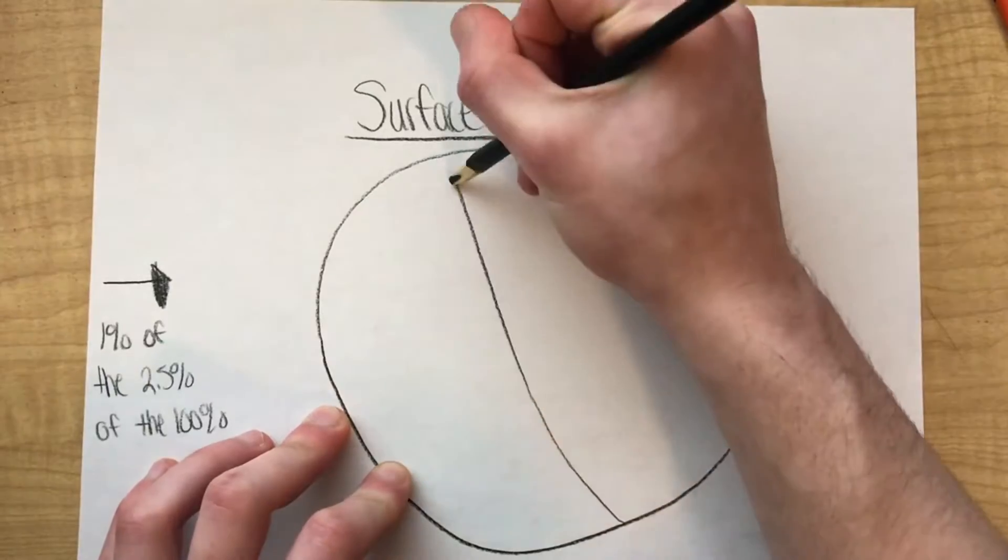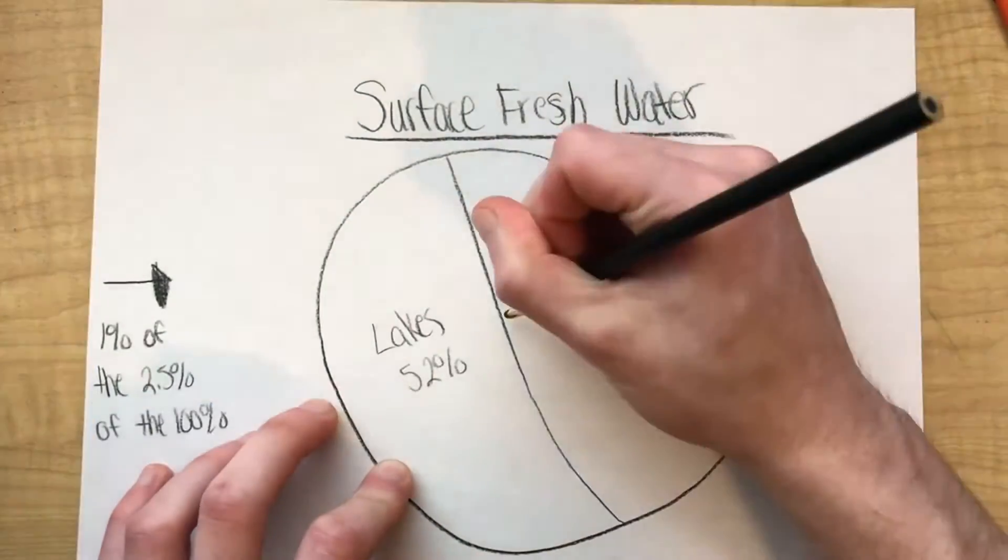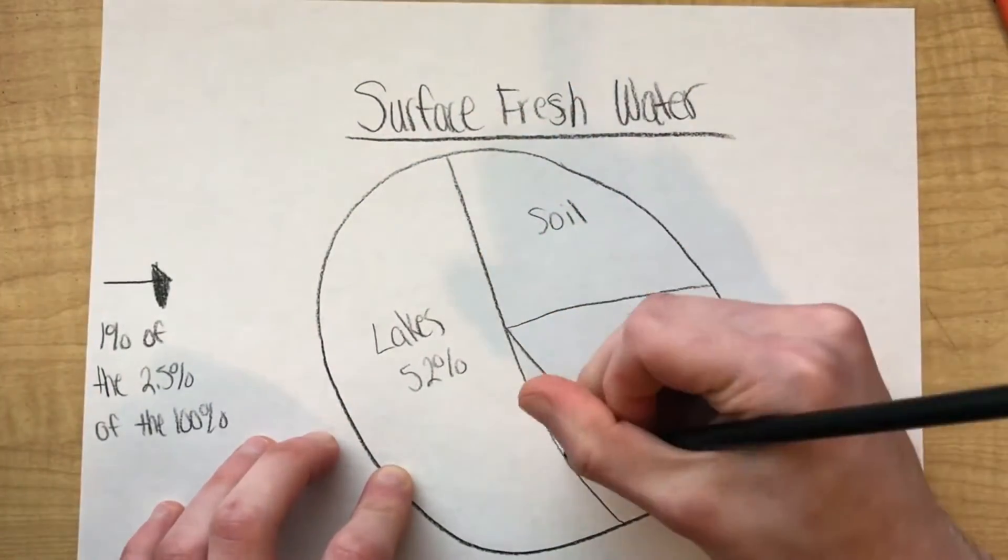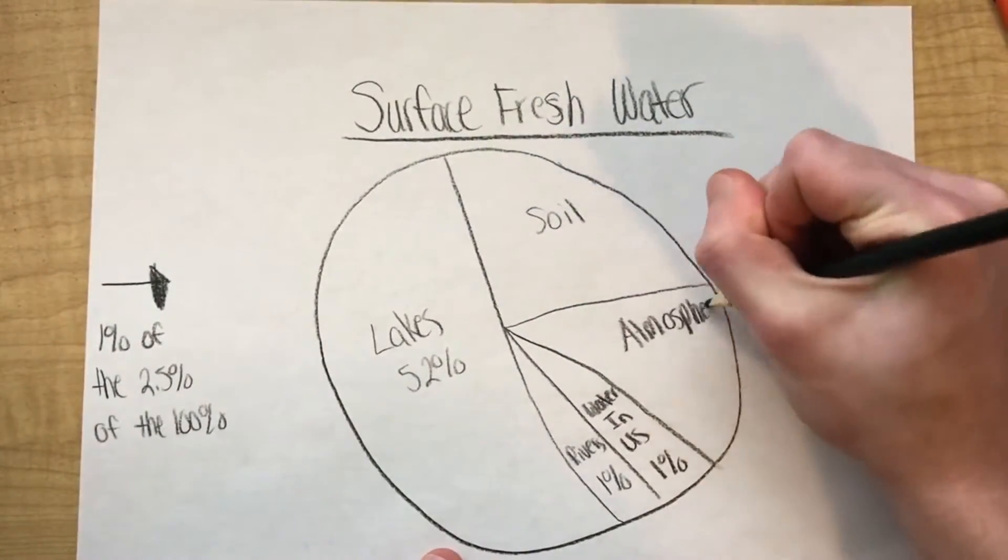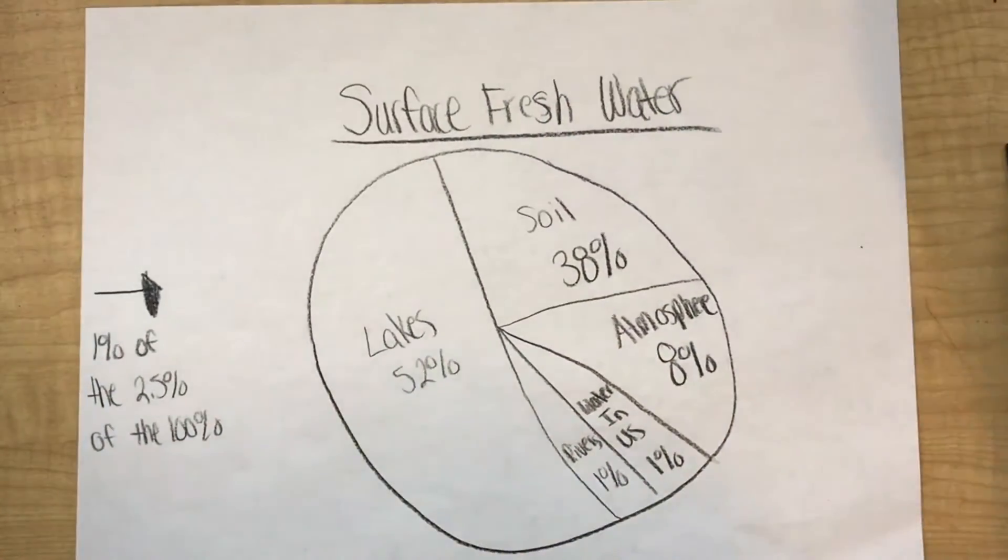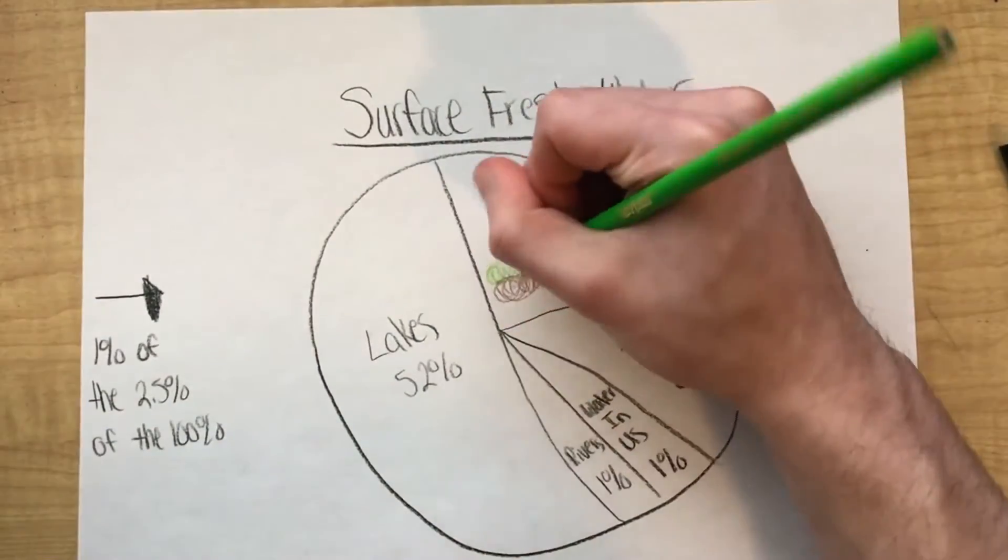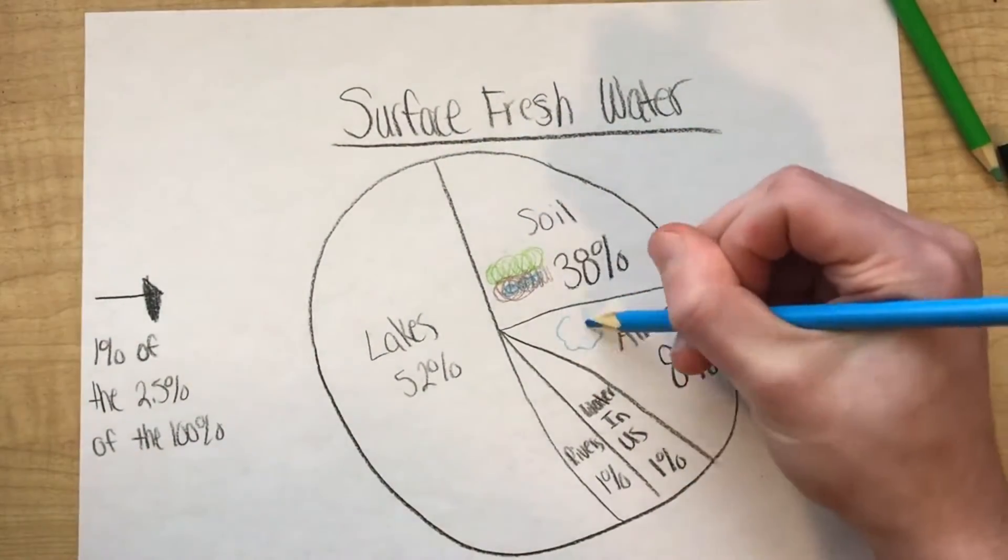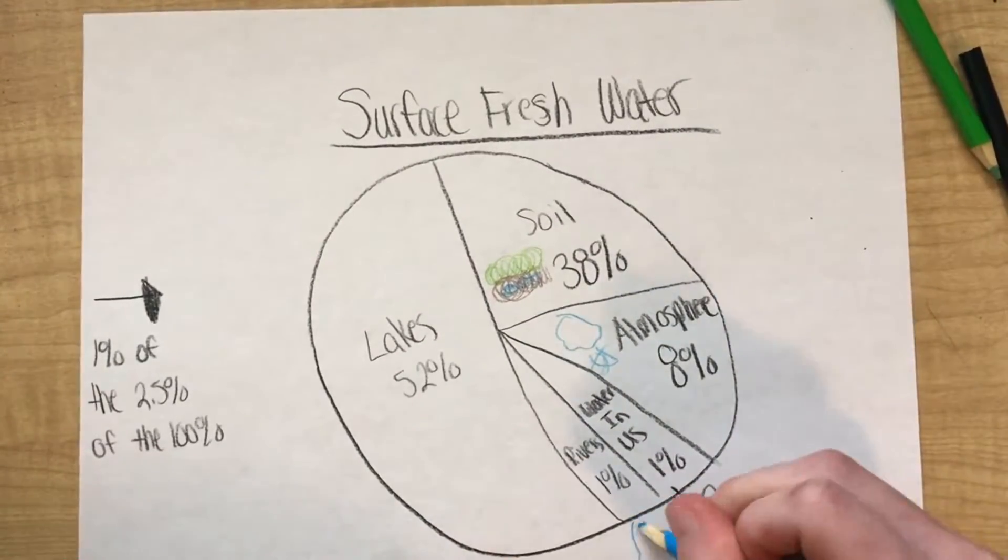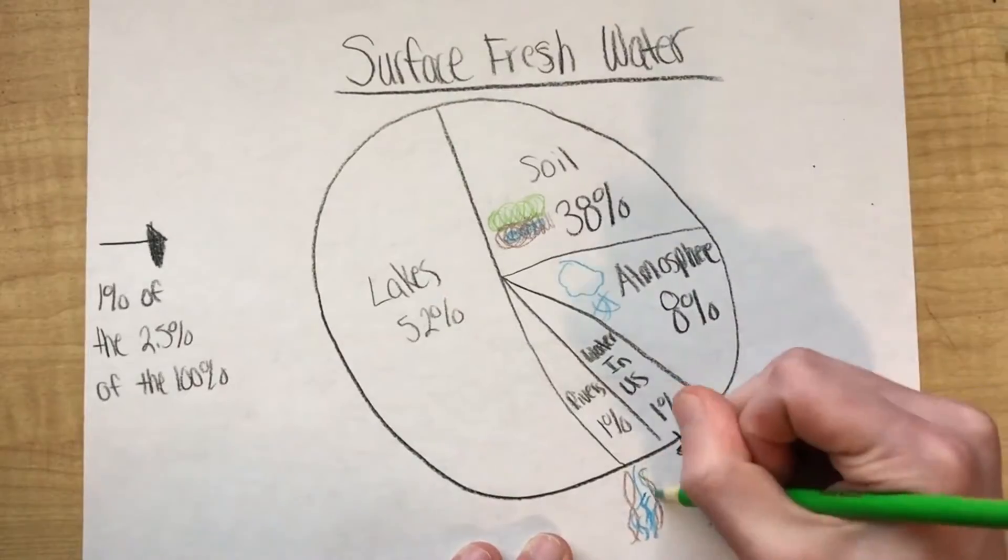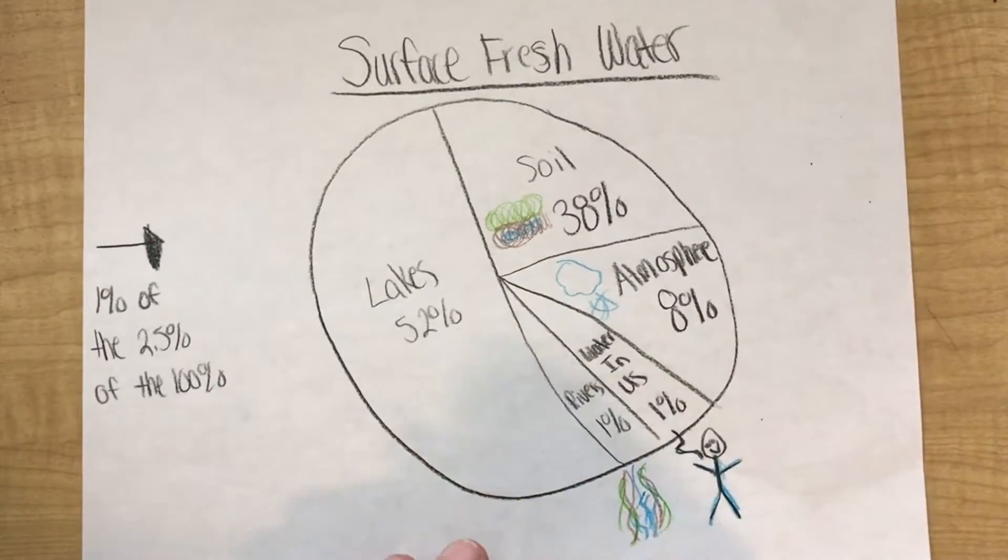Surface freshwater includes lakes, soil moisture, rivers, water within organisms, and atmospheric water vapor. Lakes make up around half the surface freshwater on earth. Rivers make up about 1%. Water that the soil holds makes up around 40%. Water in the atmosphere makes up 8%, and water within animals and plants make up another 1%.